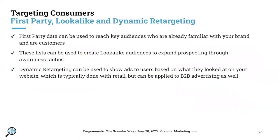Finally, first-party, lookalike, and dynamic retargeting. First-party data is any user lists you own as a company, like your current customers — we can use those for targeting. We can also use those lists to create lookalike audiences, which help expand reach in the upper funnel for awareness tactics. Dynamic retargeting is familiar — if you visit a website and view a pair of shoes, those shoes follow you around the internet. We can do that through programmatic for commercial retail items, but also B2B dynamic retargeting, using the content the user viewed on your website to show an ad specific to that content.